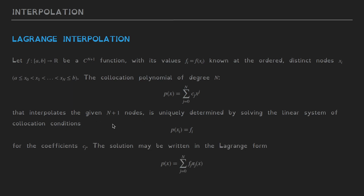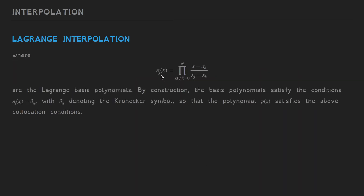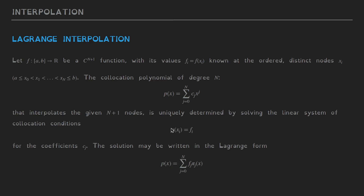But before we do that, let me point out that the solution may be written analytically in the Lagrange form: p of x equals the sum over fj times pj of x, where pj of x are the Lagrange basis polynomials. These Lagrange basis polynomials can be written as a product of (x minus xk) over (xj minus xk), and this product is over the values of k from 0 to n, excluding the value k equals j because in this case the denominator would vanish.